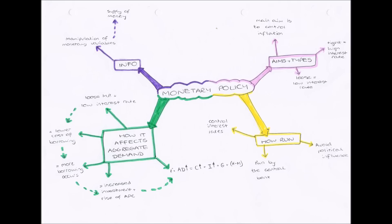So what are the aims and types of monetary policy? Well, the first thing you need to know is that the sole and only aim of monetary policy is to control the inflation rate. It doesn't have anything to do with controlling employment, encouraging economic growth, or any of those things — its main aim is to control the inflation rate.